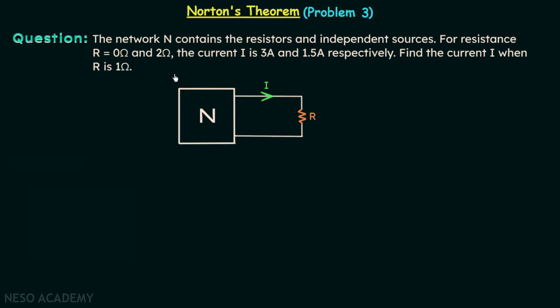The question is very straightforward. We have 3 cases given in the question. When you look at this figure, you will find we have a network N, and across the two terminals of this network, resistance R is connected. Through this resistance, current is equal to I.